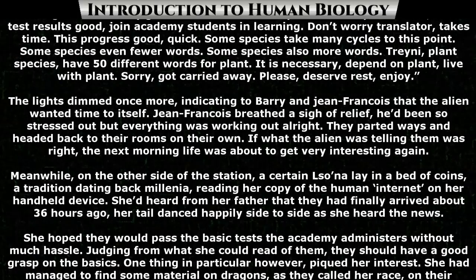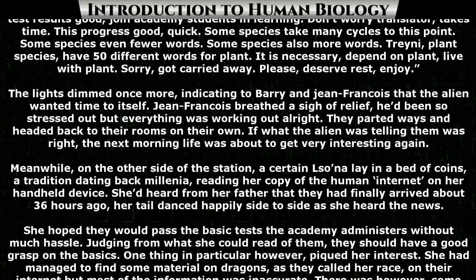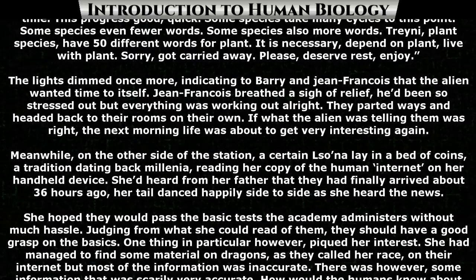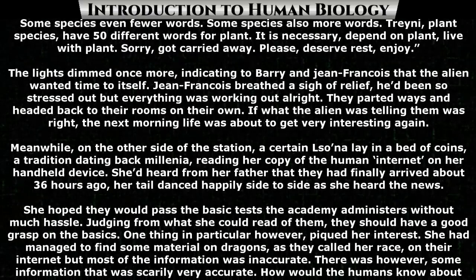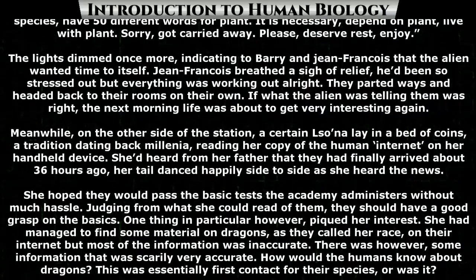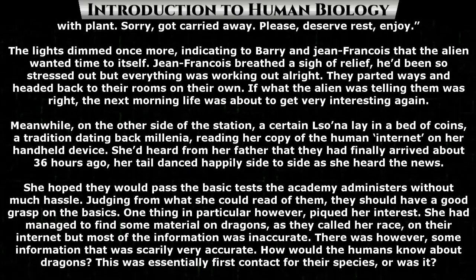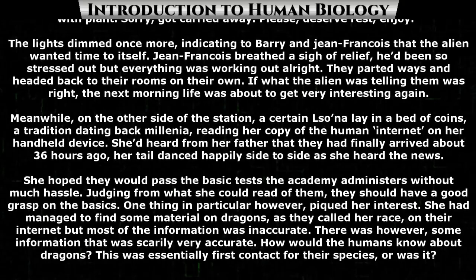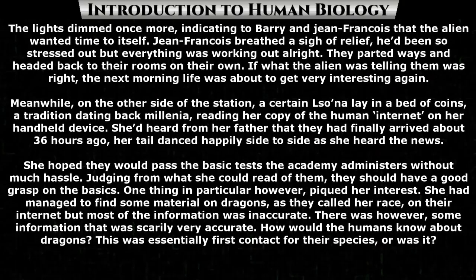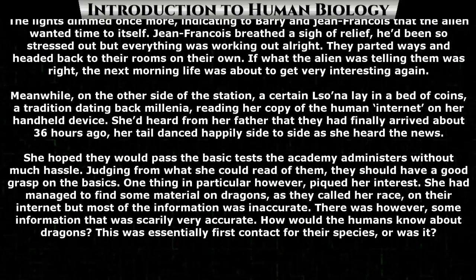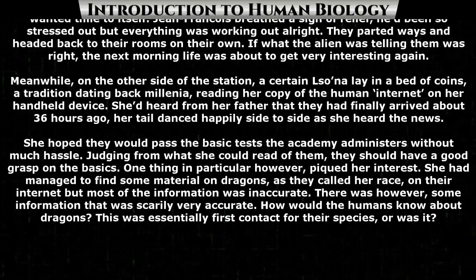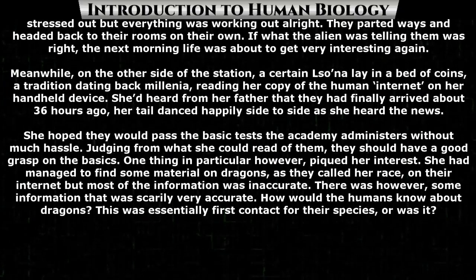Meanwhile, on the other side of the station, a certain Lesona lay in a bed of coins — a tradition dating back millennia — reading her copy of the human internet on her handheld device. She'd heard from her father that they had finally arrived about 36 hours ago. Her tail danced happily side to side as she heard the news. She hoped that they would pass the basic tests the academy administers without much hassle. Judging from what she could read of them, they should have a good grasp of the basics. One thing in particular, however, picked her interest: she had managed to find some material on dragons — as they called her race on the internet — but most of the information was inaccurate. There was, however, some information that was scarily very accurate. How would the humans know about dragons? This was essentially first contact for their species. Or was it?